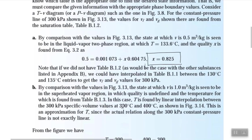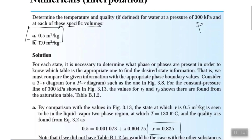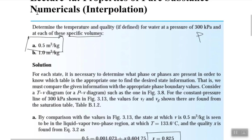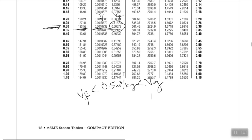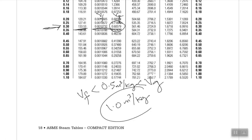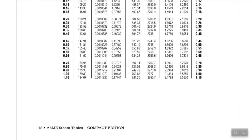Now moving to the second part. The pressure is the same, but the specific volume is now 1.0 m³/kg. Since 1.0 is definitely greater than VG = 0.60579, we are in the superheated region. So we move forward to the superheated steam table.